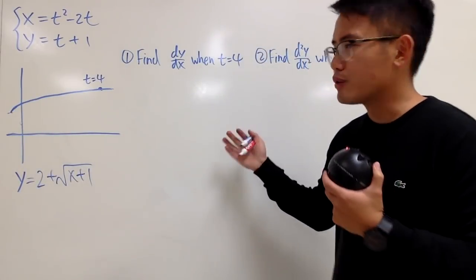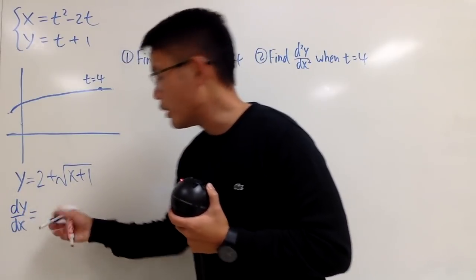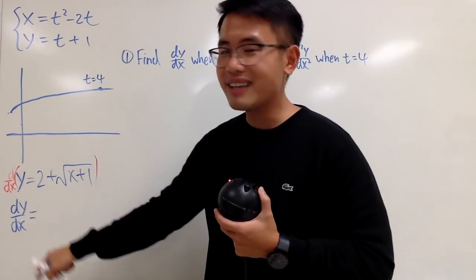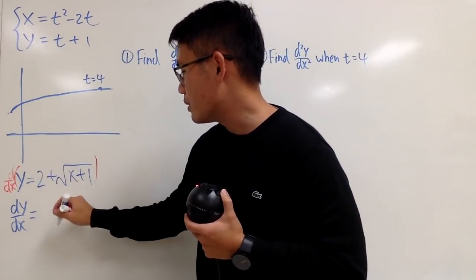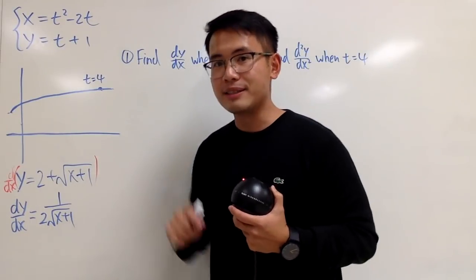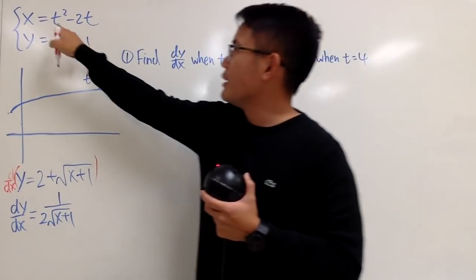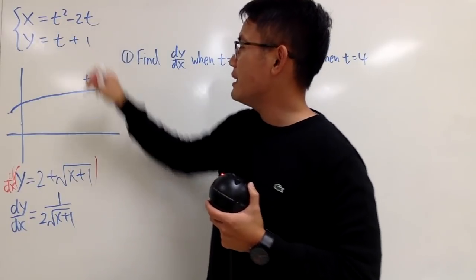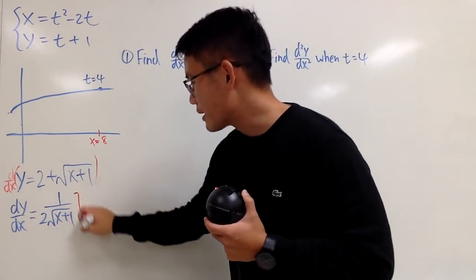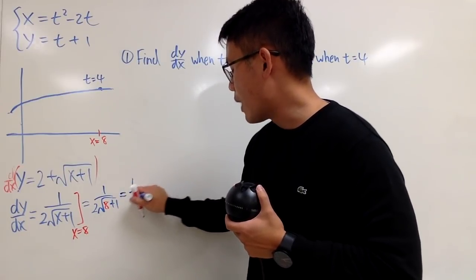So you can actually figure this out without looking at t if you don't want to. If you differentiate y = 2 + √(x+1), you get dy/dx on the left, and on the right you differentiate √(x+1), which gives you 1 over 2√(x+1). When t is 4, you can't plug in 4 directly as x — you need to find x first. Plugging t=4 into x = t²−2t: 4² is 16, minus 2×4 which is 8, so x equals 8. Plugging x=8 in gives 1 over 2√(8+1), which works out to 1/6.